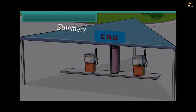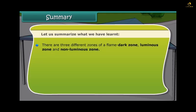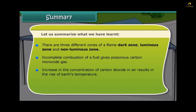Summary. Let us summarize what we have learned. There are three different zones of a flame: dark zone, luminous zone and non-luminous zone. Incomplete combustion of a fuel gives poisonous carbon monoxide gas. Increase in the concentration of carbon dioxide in air results in the rise of Earth's temperature. Acid rain contains oxides of sulfur and nitrogen in dissolved state.